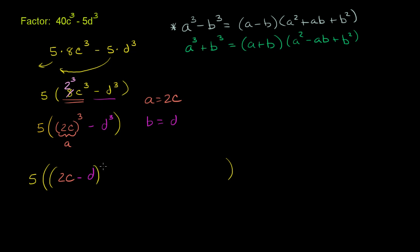2c minus d times. And now I have a squared. a squared is 2c squared, which is the same thing as 4c squared. So it's 4c squared.